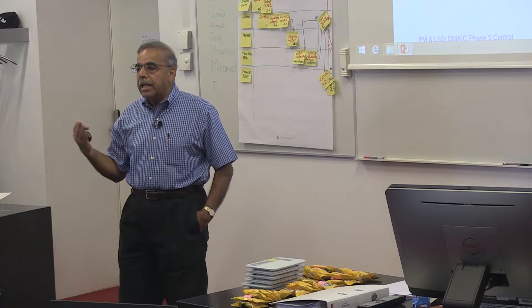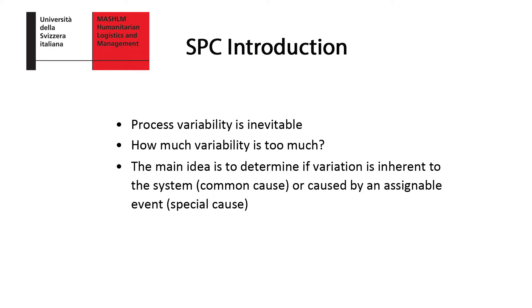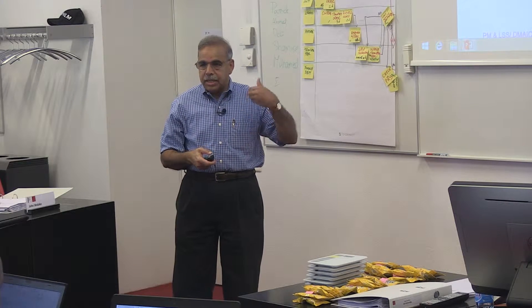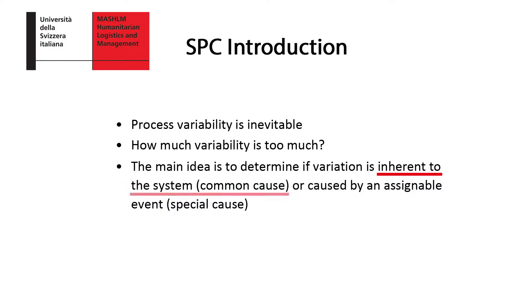Randomness you cannot avoid. Even if you follow the process perfectly the same way every time, the outcome is going to be different because there are so many variables you just cannot predict. The idea is to determine if the variation is inherent to the system — a natural common cause variation — or if it is caused by some kind of special cause.